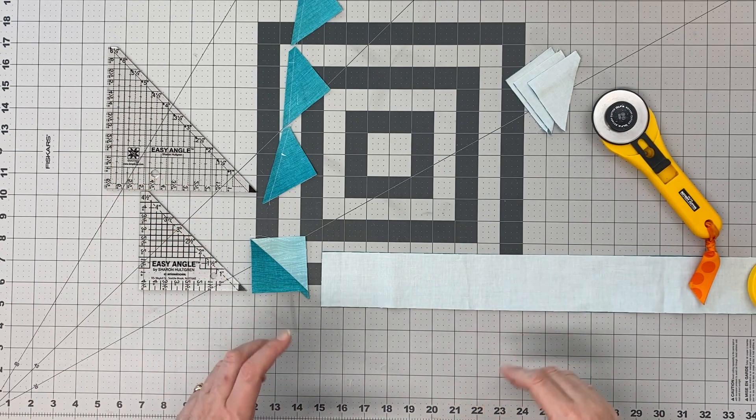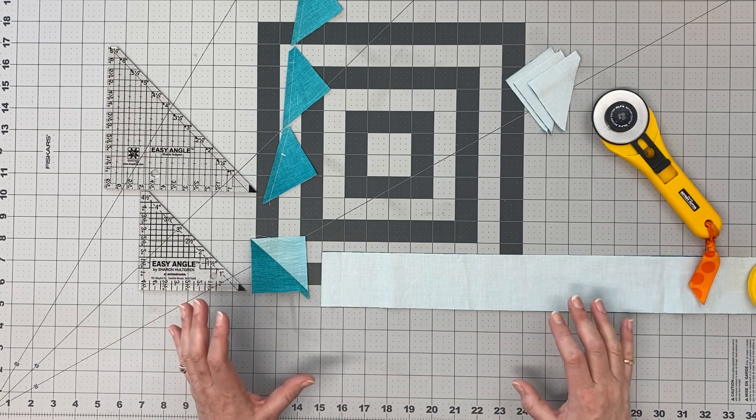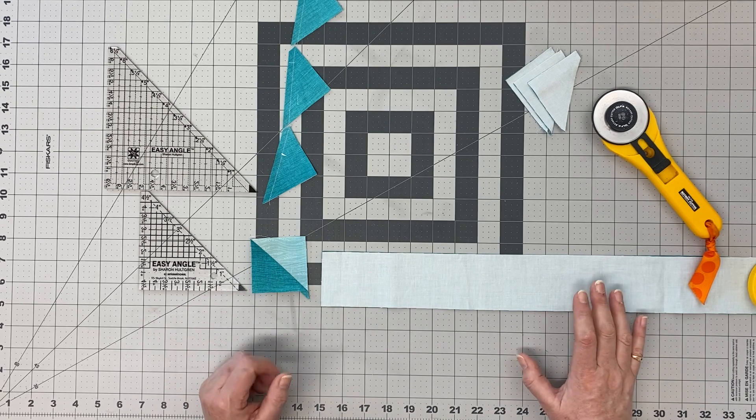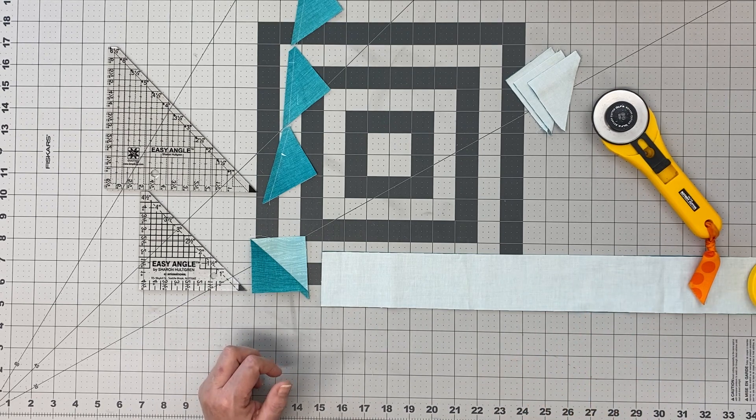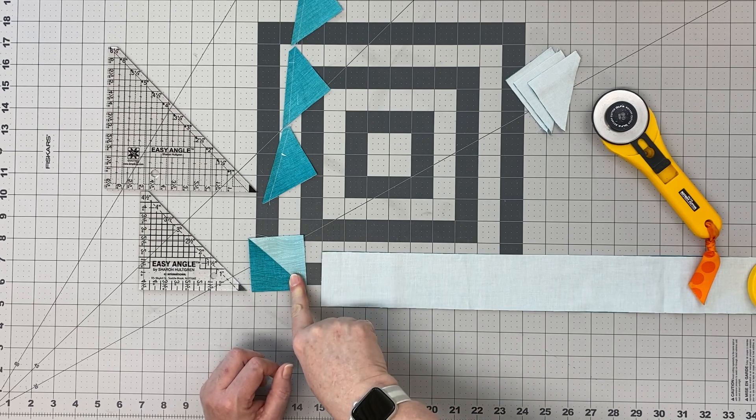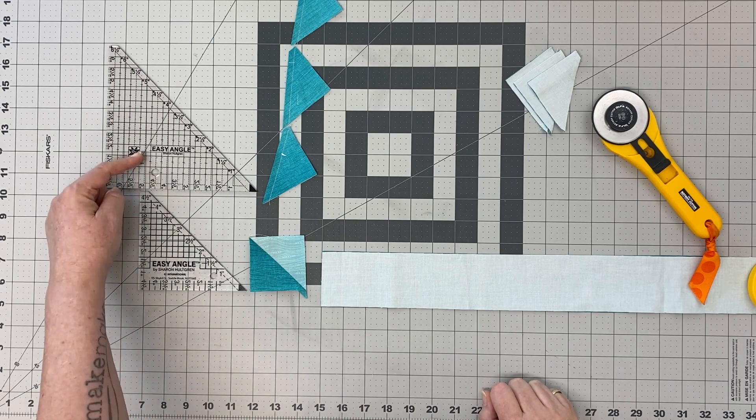this ruler. Anytime you find little HSTs in my patterns, and I'll list the patterns below in this video, you're going to find that I've recommended this ruler and given some instruction with it. It comes in a couple of sizes. I'm not sure if it comes larger than the six and a half. I'm only